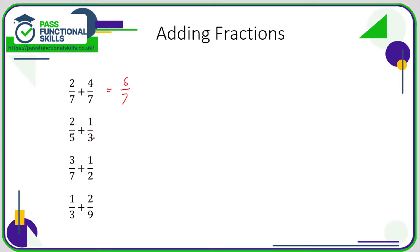But two fifths plus one third is a problem because the bottom numbers are not the same. You can only add fractions if the bottom numbers are the same. So we need to find the smallest number that both five and three go into. Taking the bigger number, five — does three go into five? No. Does three go into ten? Nope. What about fifteen? Yes, three goes into fifteen.